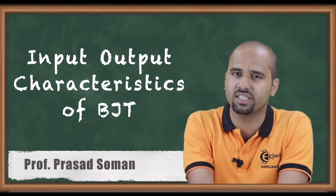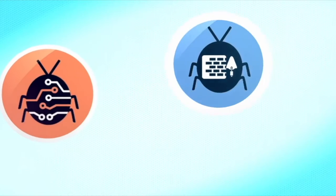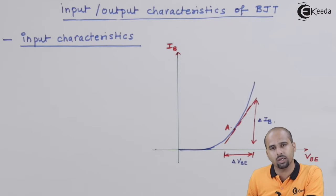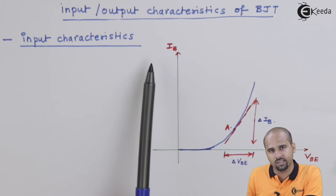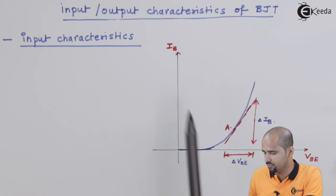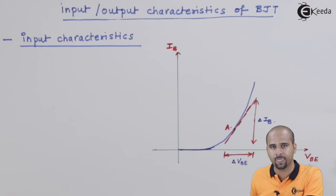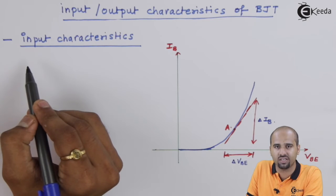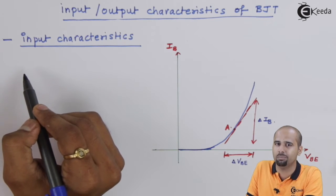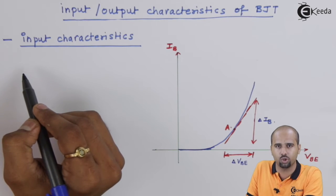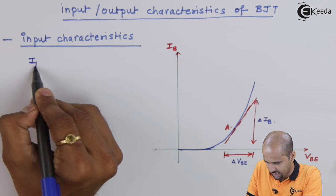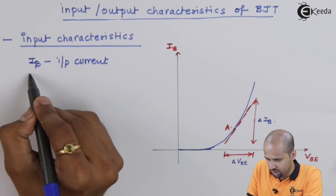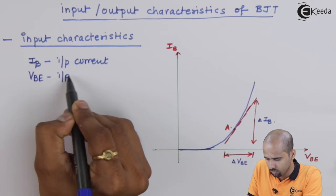Coming to the point of input characteristics, we have drawn the graph of Ib with respect to Vbe. I am considering the CE configuration, which gives Ib as input current and Vbe as input voltage respectively. So Ib is the input current and Vbe is the input voltage.